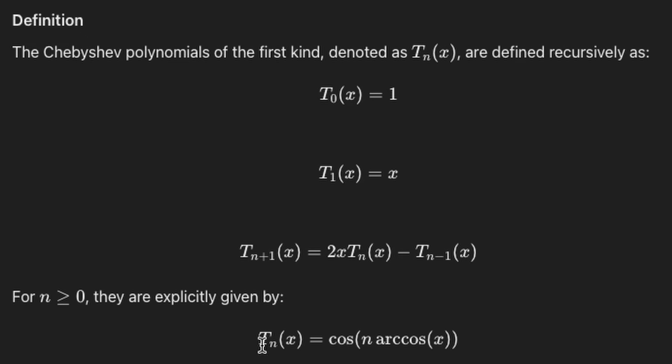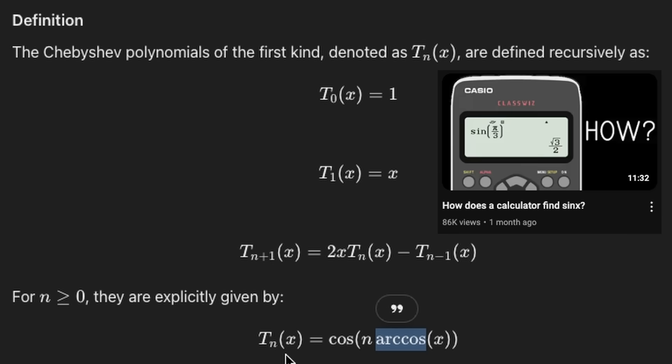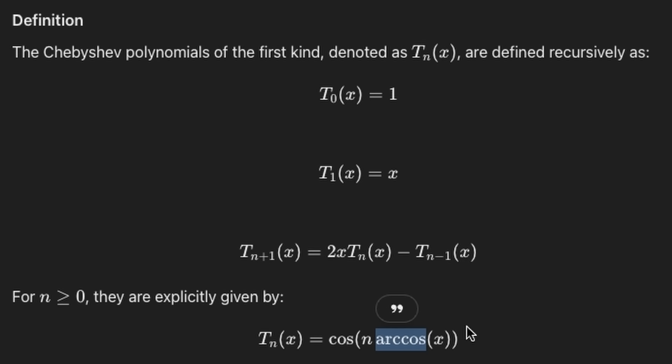It's important to note here that computers won't actually use this explicit definition of a Chebyshev polynomial only because it uses trigonometric functions here and here. And these are a whole other thing on its own, and I've made a video about how computers actually calculate trigonometric functions. Instead, it will use these recursive definitions up here which don't require any trigonometric functions.